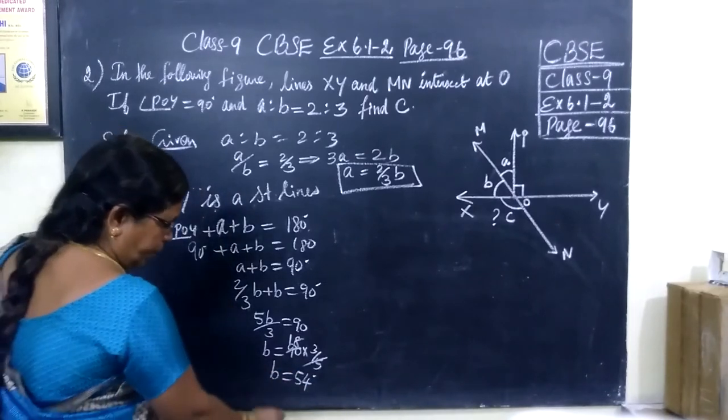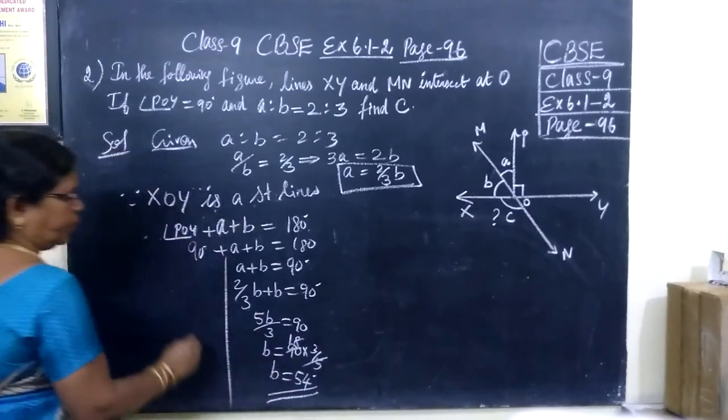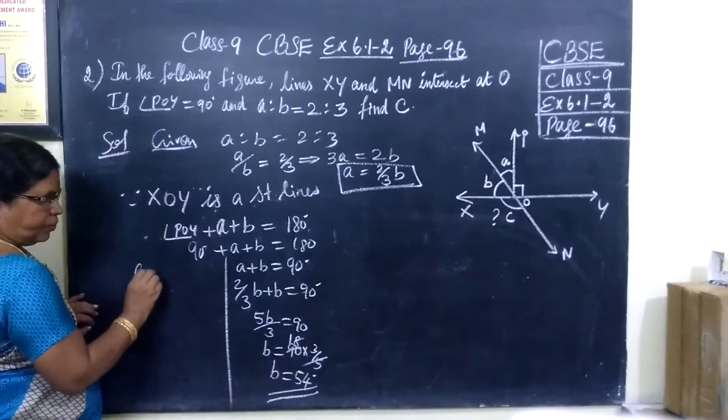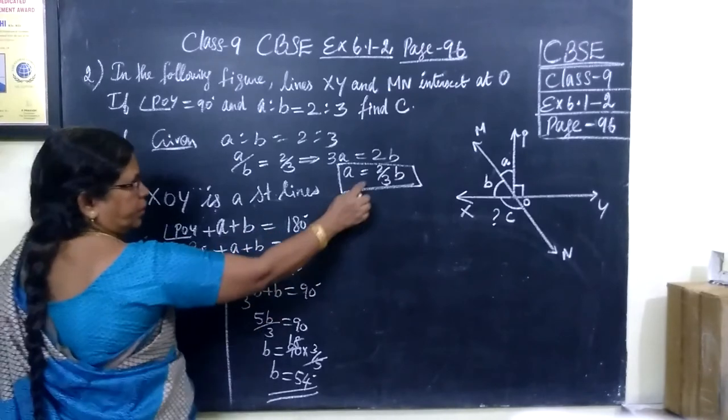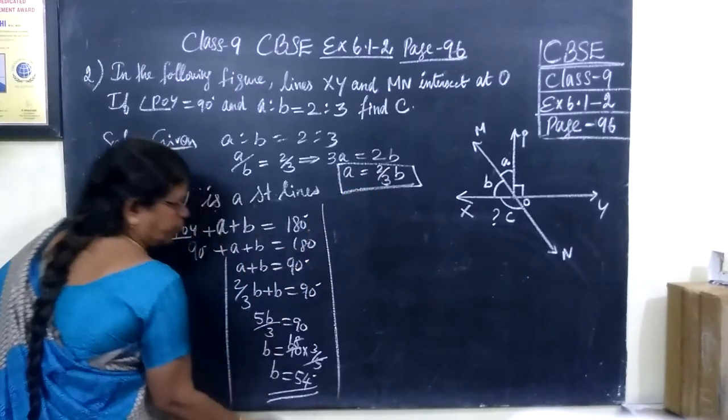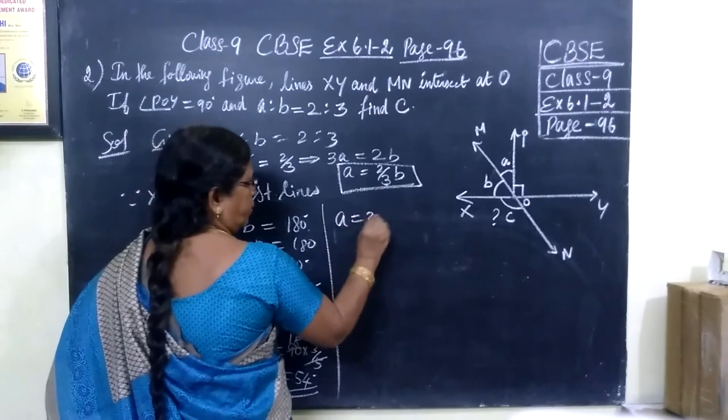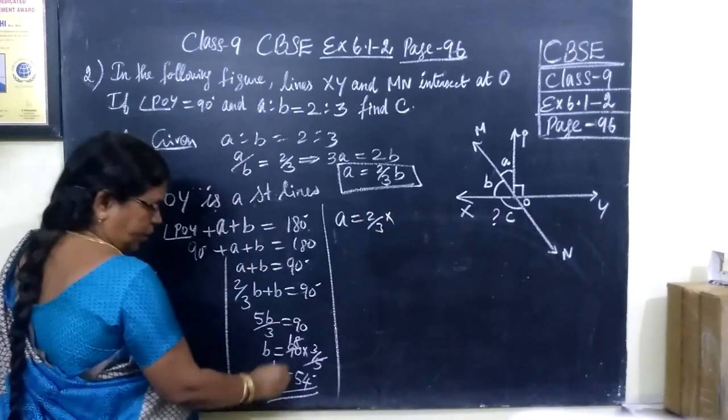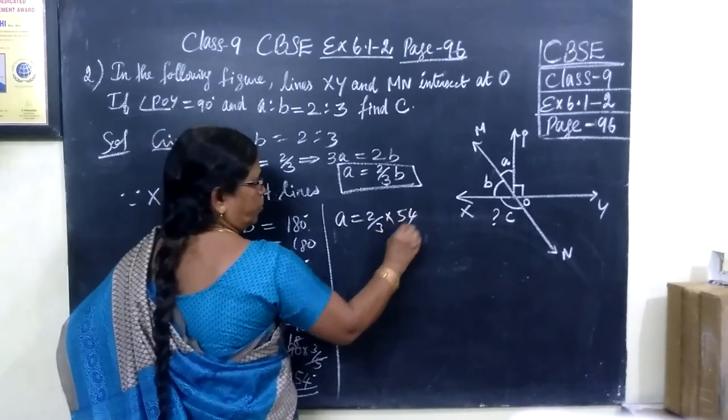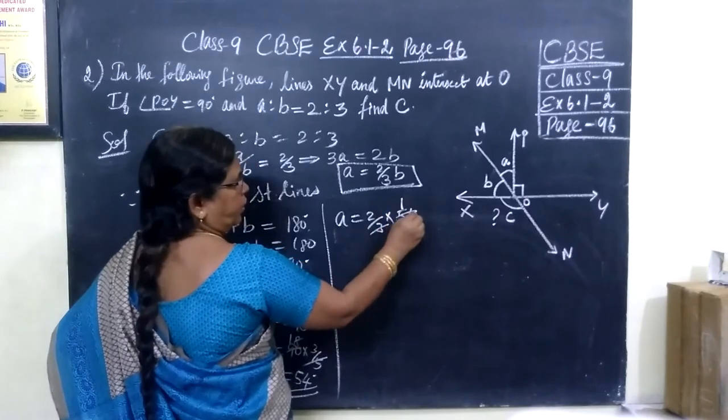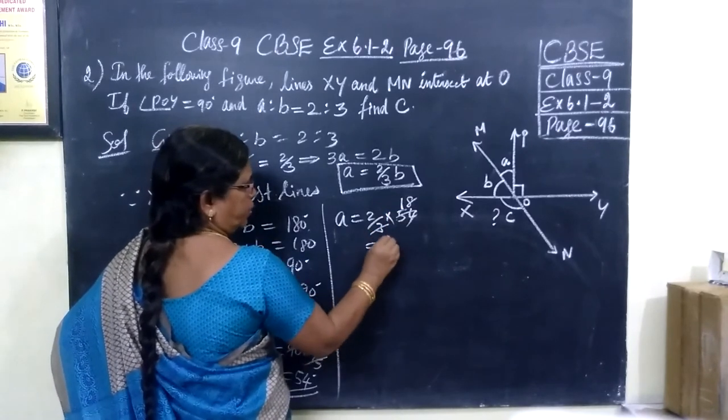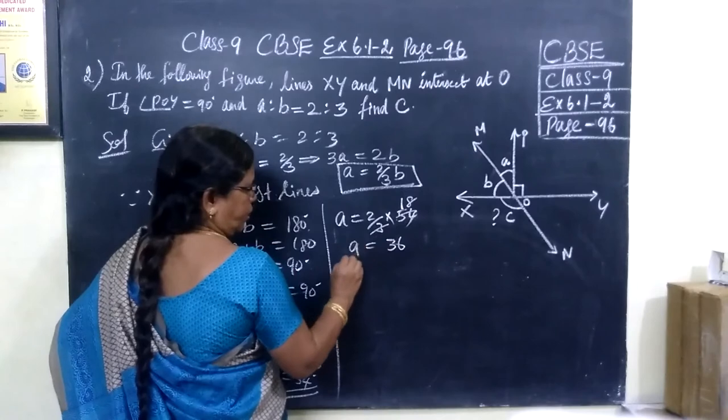So B equals 54. Then definitely, what would be A? A equals, here, what is A? 2 by 3B. I am going to put it. So A equals 2 by 3 into B value 54. So if we cancel, here 1 times 18 times, so 36. So A value 36.